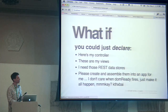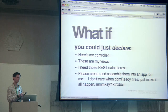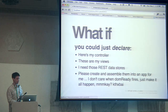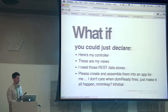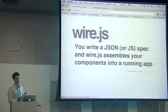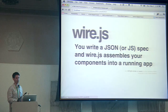Wire.js allows you to declaratively specify what your controller is, what your views are, what your models are, what DOM nodes you need, and what events should be hooked up between your view and your controller. It allows you to do that all declaratively — you don't have to worry about the order, you don't have to worry about when DOM ready happens. Wire figures all of that out for you. You write a JavaScript object literal or JSON-like spec that wire assembles into a running app and manages, so you can destroy it with a single line of code later.